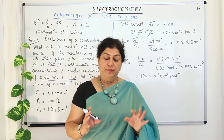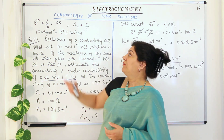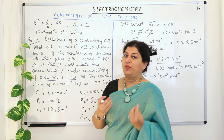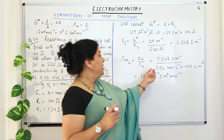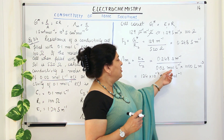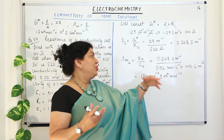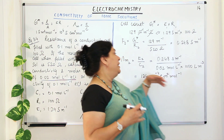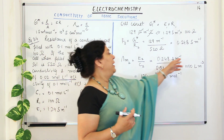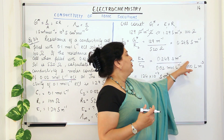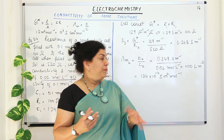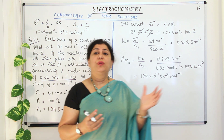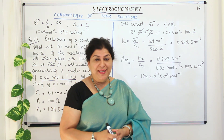This same problem in your textbook has also been solved in terms of centimeters. The only difference is unit conversion: wherever you have meters, in the centimeter case you multiply by 1000 to convert molarity into centimeter cube concentration. You will get the same numerical answers; only the units will differ.